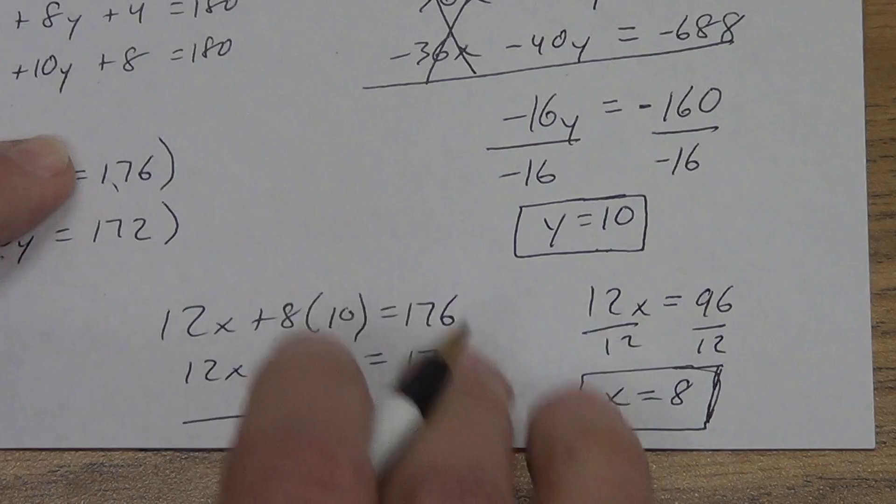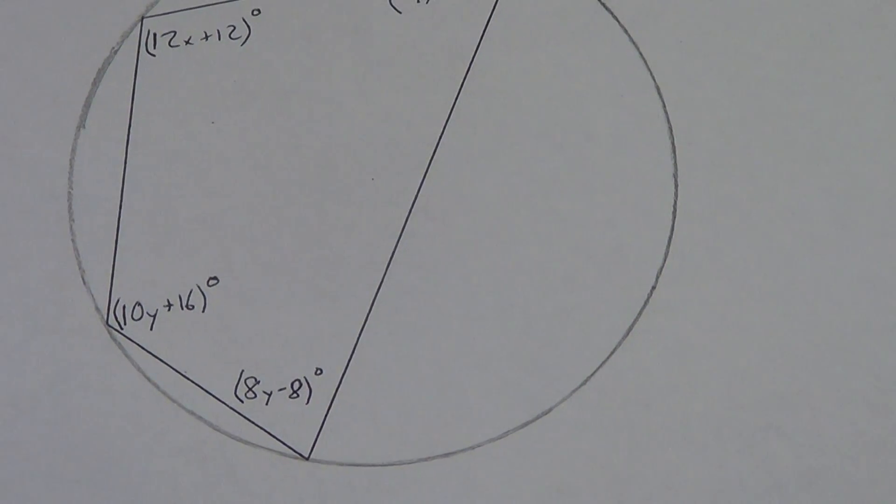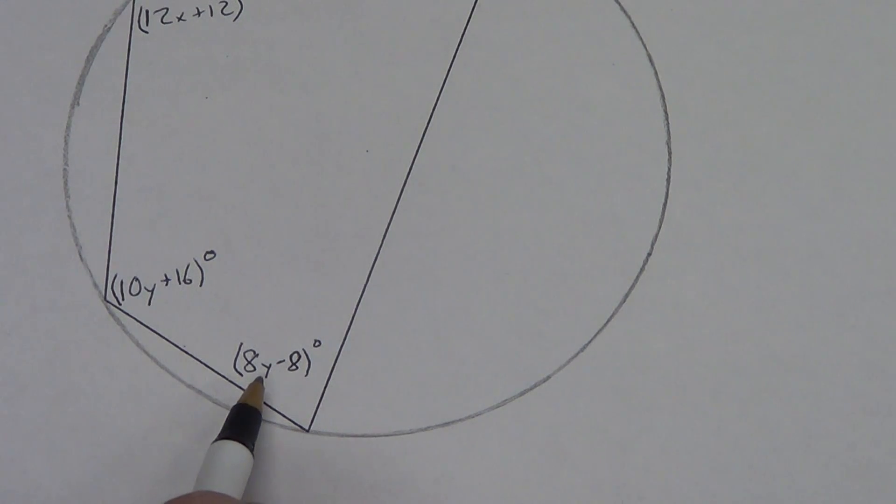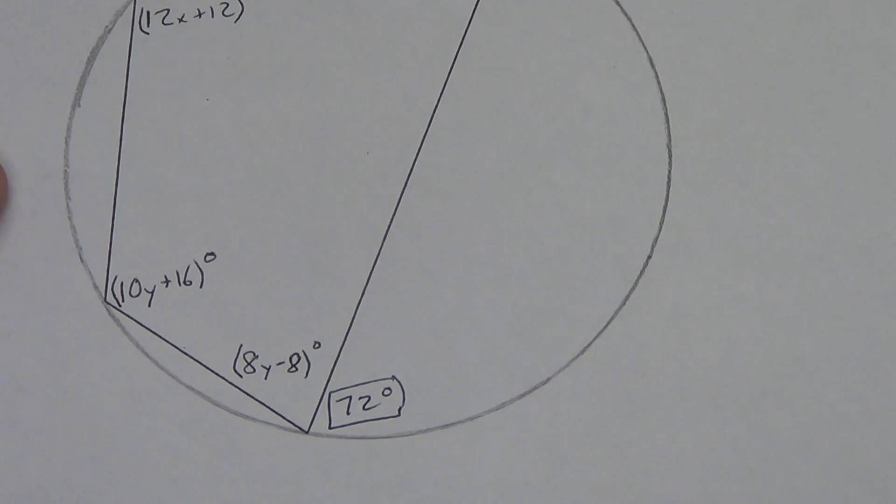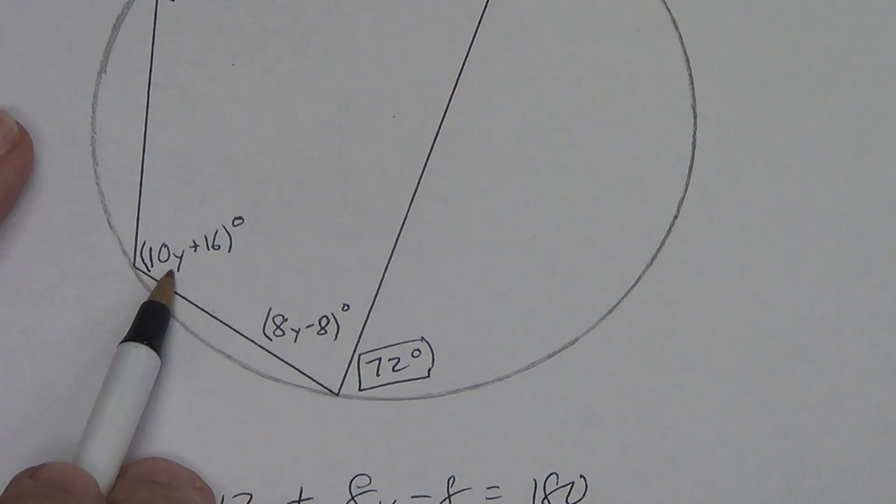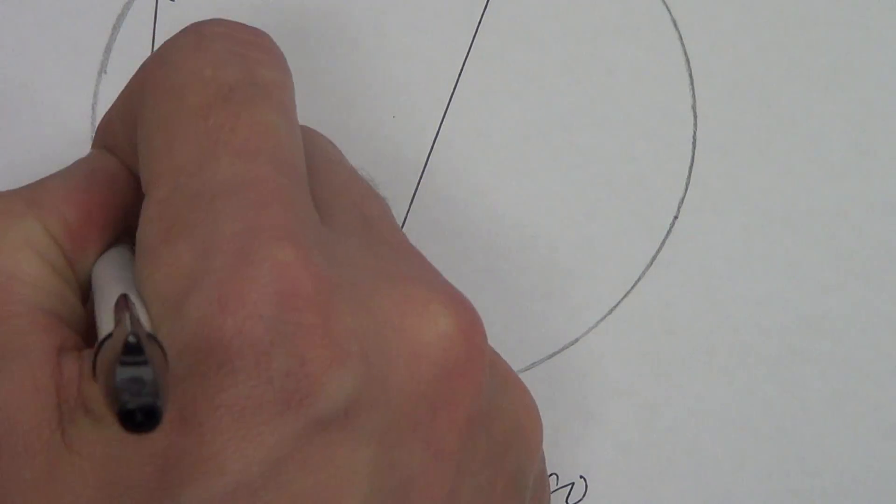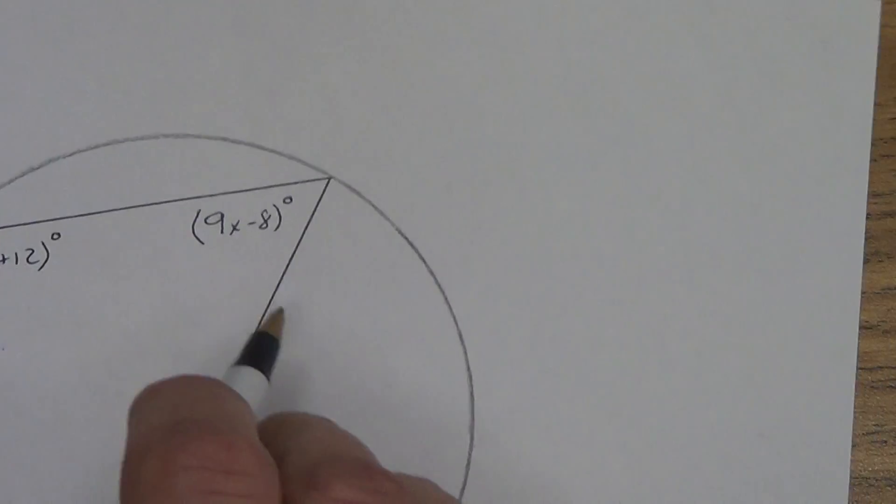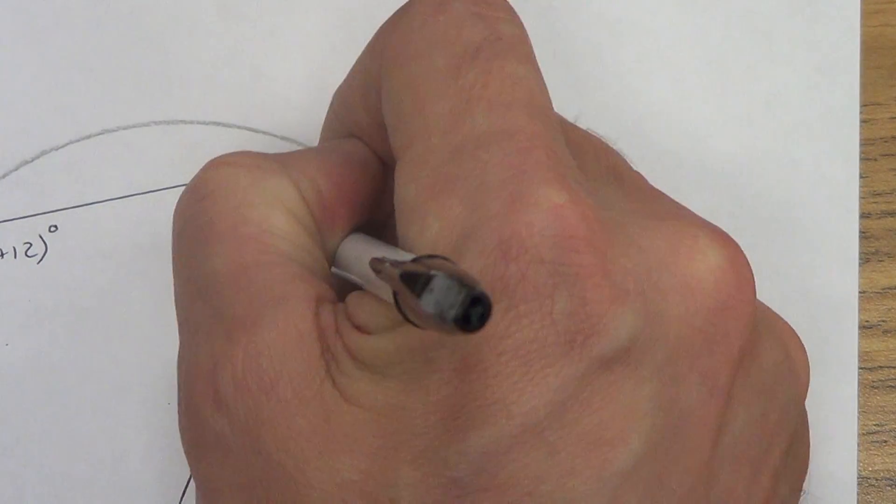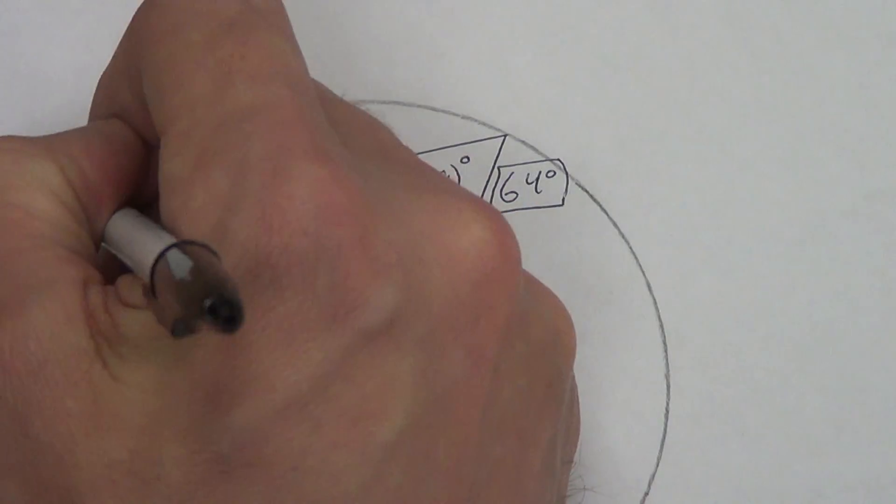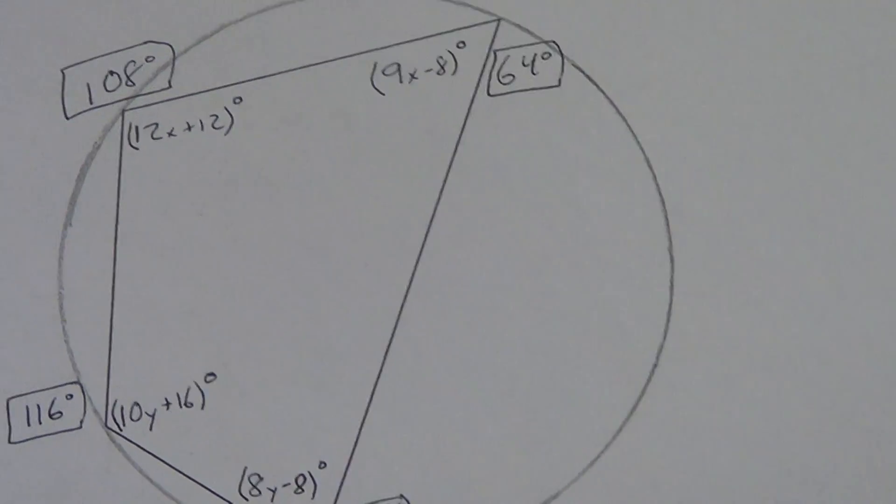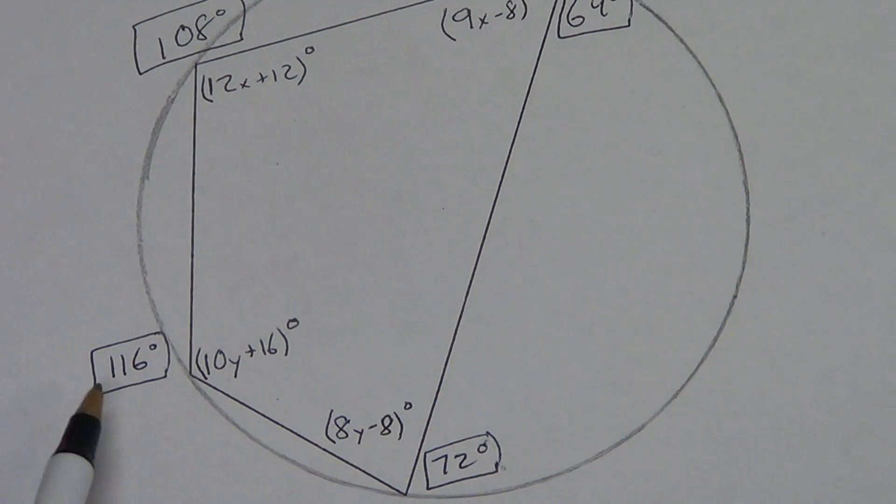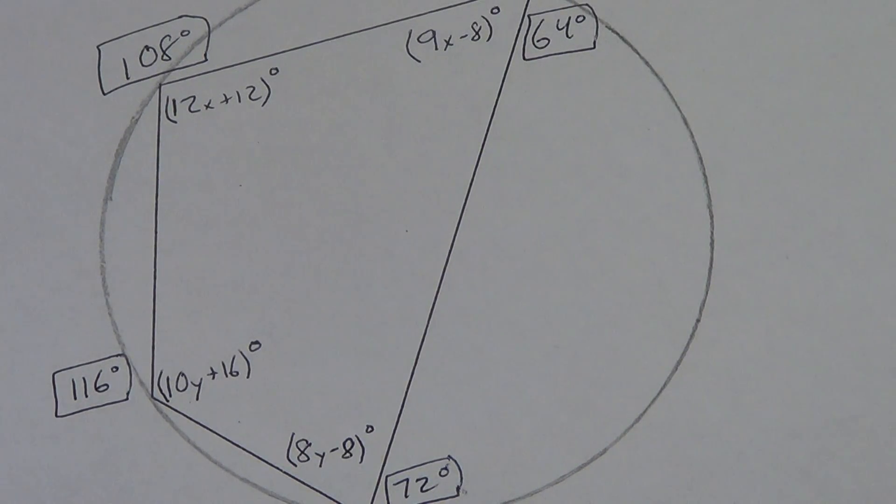How do I know if I got this right? Take both numbers, the 8 and the 10, and plug them back in. 8 times 10 is 80, minus 8 is 72 degrees. 10 times 10 is 100, plus 16 is 116 degrees. The x was 8, so 9 times 8 is 72, minus 8 is 64 degrees. 12 times 8 is 96, plus 12 is 108 degrees. Remember, opposite angles are supplementary. 108 plus 72 is 180. 116 plus 64 is 180. Yes, it works. We're done. Bunch of algebra. Those of you who like algebra, you should enjoy this. If you don't like algebra, I'm sorry. You'll have to get over it because you're going to do a lot of it. Thank you.